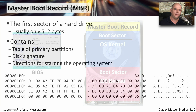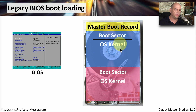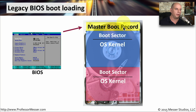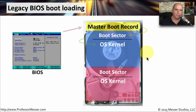If you look at a graphical display of the boot process, you can see the master boot record. On this particular drive, there's a boot sector and an OS kernel for two different partitions, meaning there are probably two different operating systems. The BIOS is going to hand off to the master boot record, which then accesses the boot sector of a particular partition, which then loads the operating system kernel.